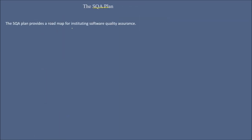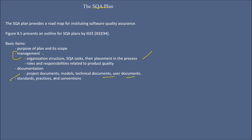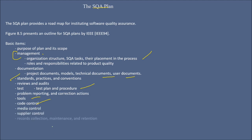The SQA plan provides a roadmap for instituting software quality assurance. Basic items include: purpose and scope of the plan; management, organization structure, SQA tasks and their placement in the process; roles and responsibilities related to product quality; documentation including project documents, models, technical documents, and user documents; standards, practices, and conventions being used; reviews and audits; test plan and procedures; problem reporting and corrective actions; tools being used; code control, media control, supply control; recording, maintaining, and retaining information; training of individuals; and risk management. This was a basic overview of software quality assurance.